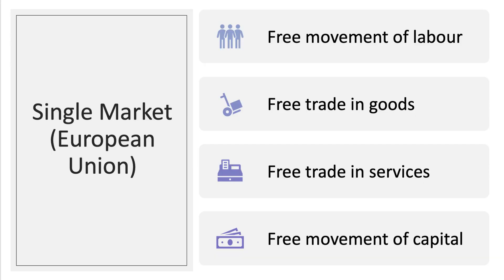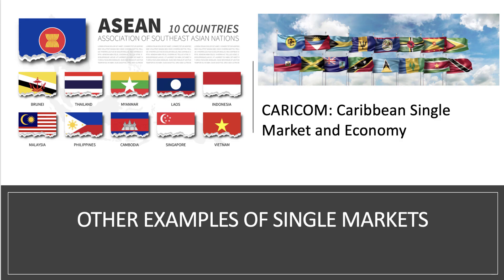A single market is a deeper stage of integration. The European Union single market is built on four freedoms: free movement of labour, free trade in goods, free trade in services, and crucially the free movement of capital — financial capital, bonds, equities, and currencies, as well as foreign investment. The EU is of course a single market, as is ASEAN with 10 Southeast Asian countries, and also CARICOM, the Caribbean single market and economy.